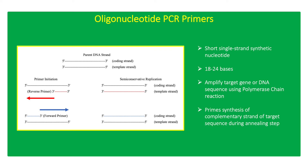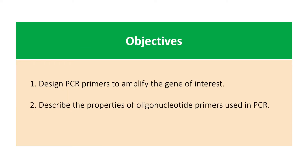Primers bind to the complementary bases on the target DNA sequence during the annealing stage of the PCR cycle to initiate the addition of new nucleotide bases facilitated by the DNA polymerase. The objectives of this activity are to design PCR primers to amplify the gene of interest and to describe the properties of oligonucleotide primers used in PCR.